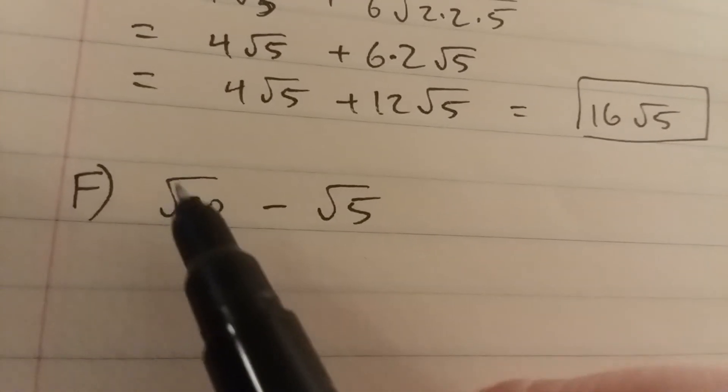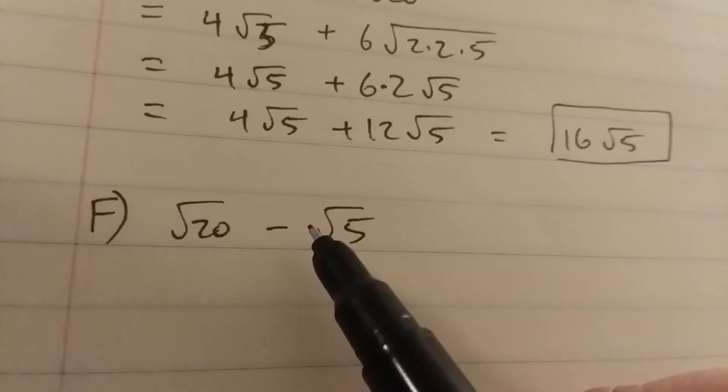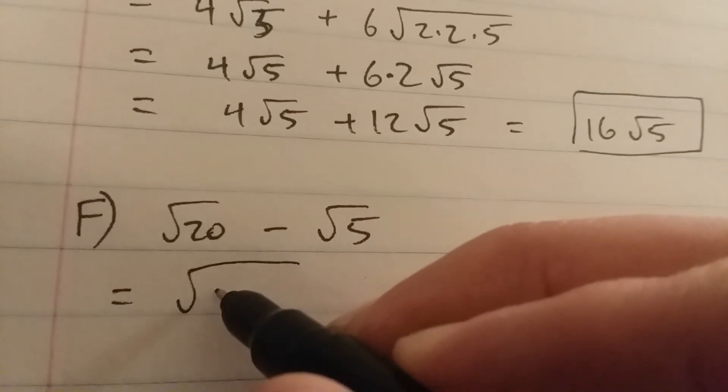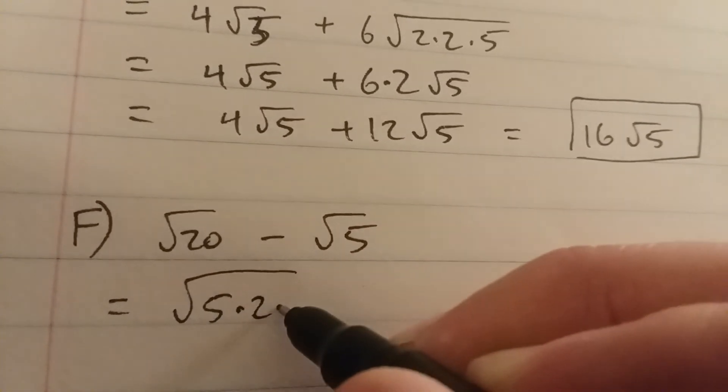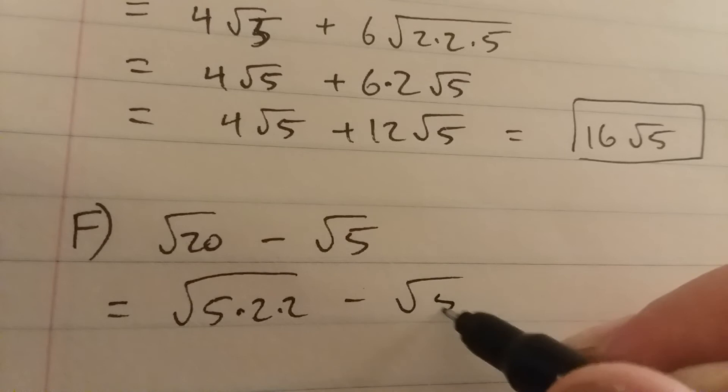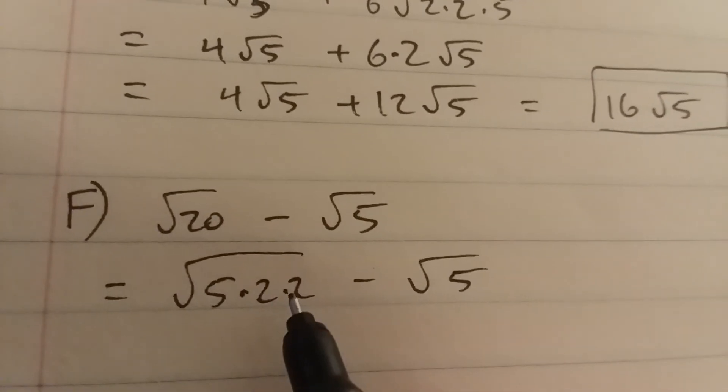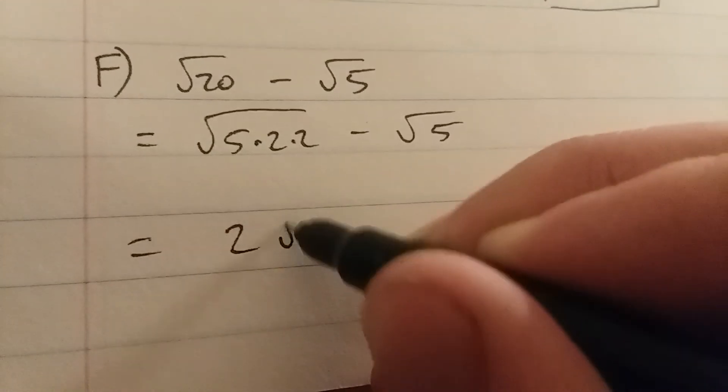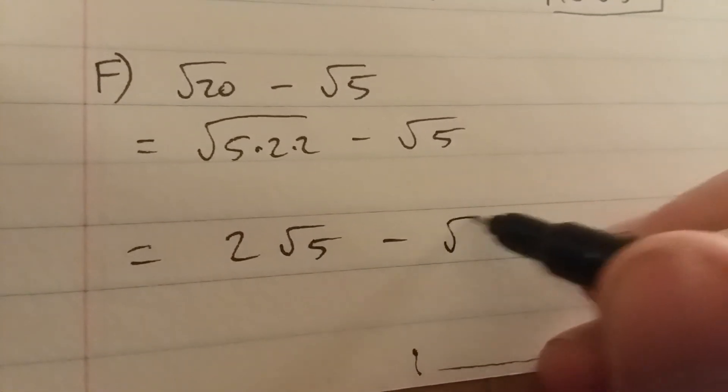Next one, same thing here. The square root of 20, you can write that as 5 times 2 times 2 minus the square root of 5. You can factor a 2 out here, or pull a 2 out. So it's 2 root 5 minus the square root of 5.